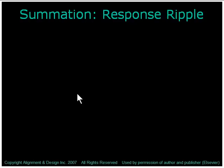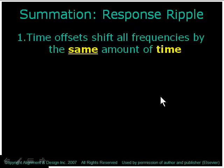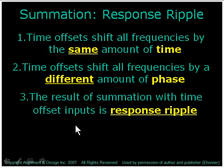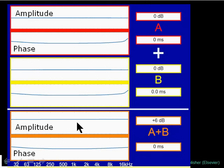When we move and expand this beyond such an abstraction, we're going to put frequency response into the formula, and we have to factor time in. In this case, time offsets between two sources will shift all frequencies by the same amount of time, and yet these time offsets will shift all frequencies by a different amount of phase. The result of this summation, then, with time offset inputs, is response ripple, also known as comb filtering and a variety of other names.